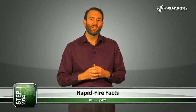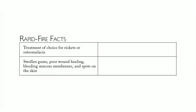Rapid-fire facts: Treatment of choice for rickets or osteomalacia — that's vitamin D. Patient with swollen gums, poor wound healing, bleeding mucous membranes, spots on the skin, or if they have a pirate on their shoulder — think scurvy, that's vitamin C deficiency. All right, that's the end of Biochem 17. I hope you learned something — I'll see you next time.